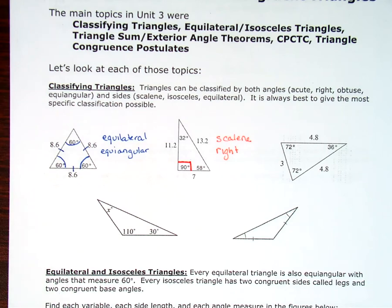Even though it has two acute angles, we go with the biggest angle and we call it a right triangle. So this is a scalene right triangle.